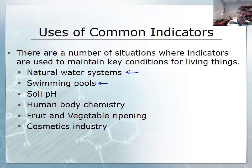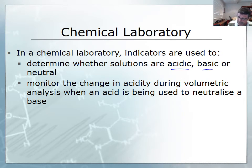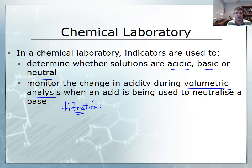pH can also affect things like fruit and vegetable ripening and, very importantly, the cosmetics industry. In the laboratory we'll have a number of experiments involving the use of indicators to help us determine the nature of different types of solutions - whether they're acidic, basic or neutral. We also need to monitor changes in acidity during volumetric analysis or titration, a very important technique where monitoring change in acidity is critical.